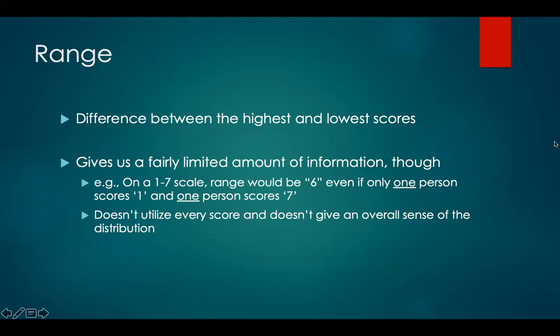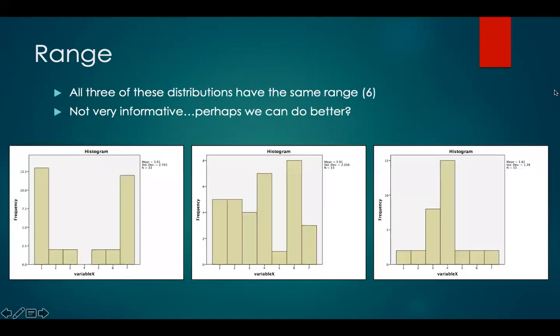The range is simply the difference between the highest and lowest scores, and it gives us a fairly limited amount of information. On a one-through-seven scale, the range would be six, even though only one person scores one and one person scores seven. This doesn't utilize every score and doesn't give an overall sense of the distribution. All three of the distributions shown have the same range of six, so it's not very informative. But perhaps we can do better.